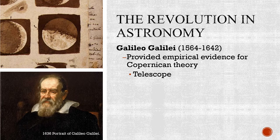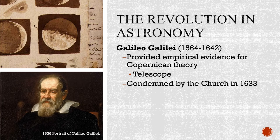Galileo also drew some of the best drawings yet made of the rings of Saturn. However, his ideas were fiercely opposed by the church. In 1633, he found himself on the wrong side of Pope Urban VIII, was arrested and accused of heresy, and tried by the Inquisition. He was found guilty and forced to recant. He spent much of the remainder of his life under house arrest and died penniless, not knowing just how influential his work would be.